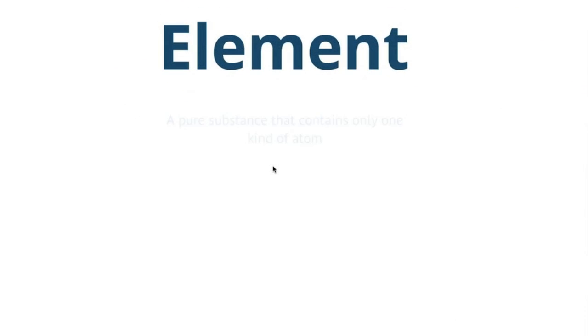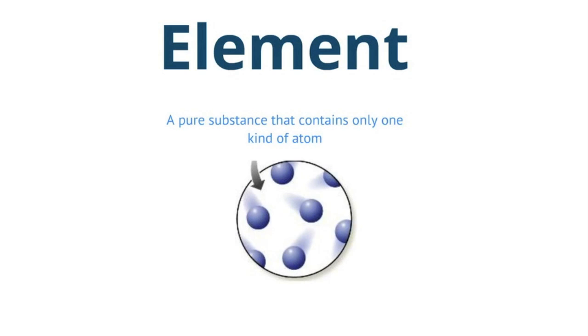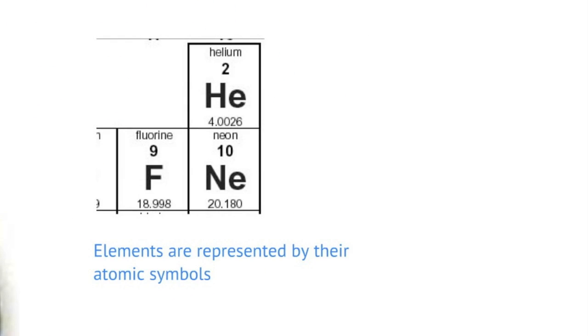The two types of pure substances are elements and compounds. Elements are pure substances that contain only one kind of atom. As we can see in this picture, each blue circle represents an atom. If there's only one kind of atom, then that lets us know that this is an element. Elements are represented by their atomic symbols.